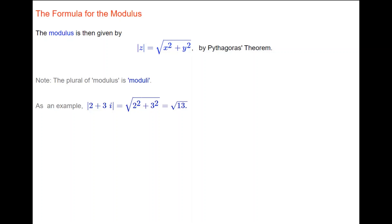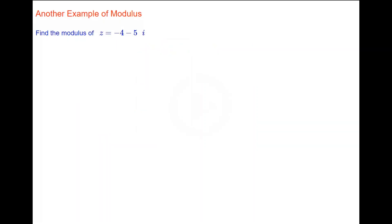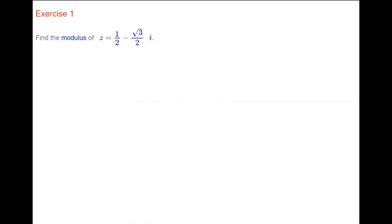Note that the modulus is a non-negative real number. As another example, we'll find the modulus of complex number Z which is minus 4 minus 5i. The modulus of Z will be the square root of minus 4 all squared plus minus 5 all squared, which is the square root of 16 plus 25, which is the square root of 41.